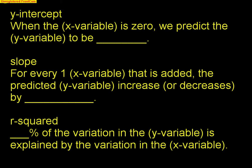To understand the interpretations of y-intercept, slope, and r-squared, I wrote some scripts. If you follow the scripts, you can pretty much always get it right. The y-intercept: when the x variable is 0, we predict the y variable to be [answer with units]. For example, when the mileage of the car is 0, we predict the sale price to be $20,000. Slope: for every one x variable added, the predicted y variable increases or decreases by the actual slope value — don't forget units, which are the same as the y variable. For example, for every one mile added to the car, the predicted price decreases by 16 cents.